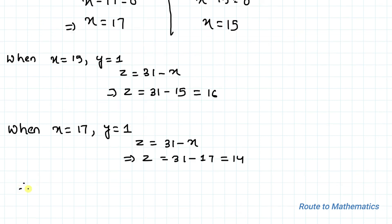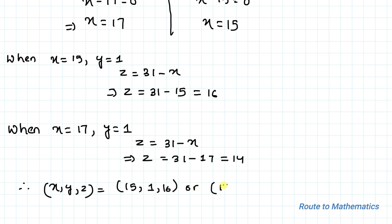Therefore, the ordered triples (x, y, z) are (15, 1, 16) or (17, 1, 14). I hope you have understood the solution. Thanks for watching. Please subscribe to my channel and click the bell icon for more such interesting videos. Thank you.